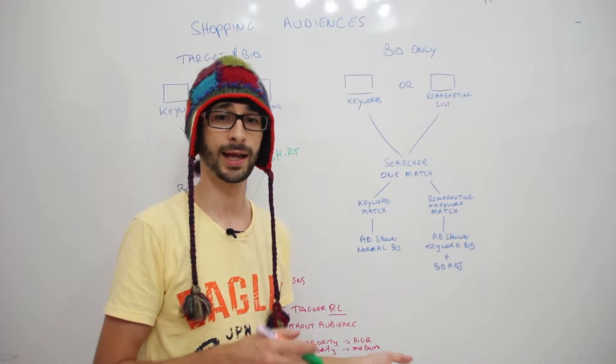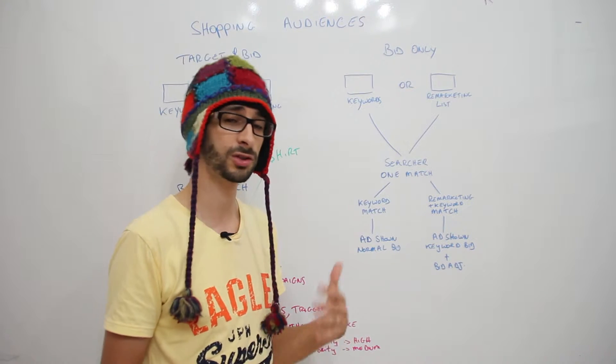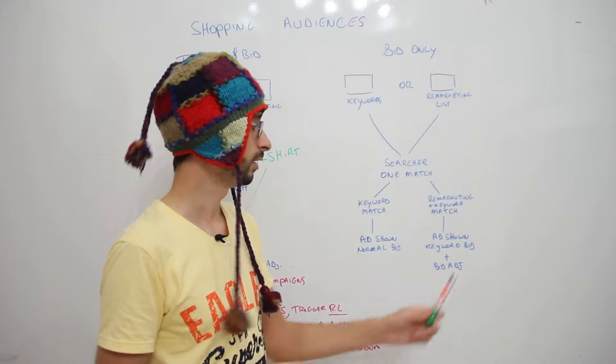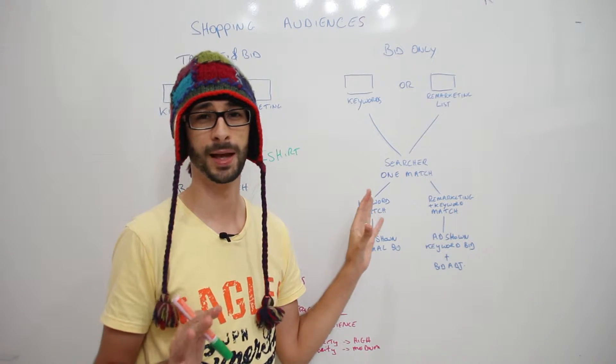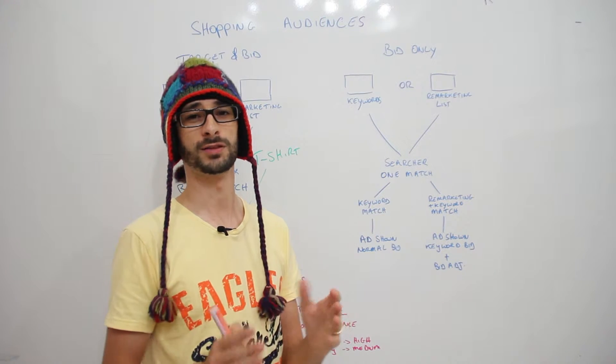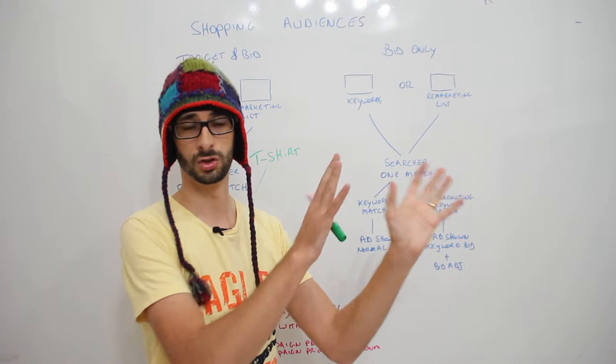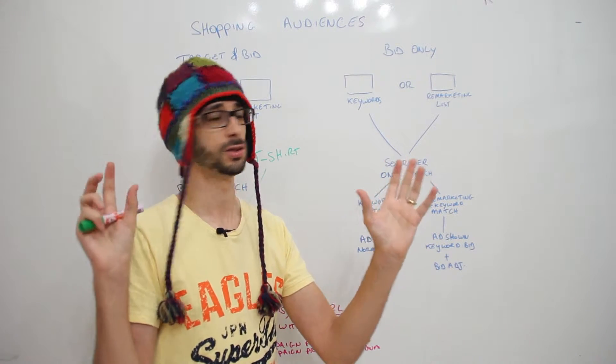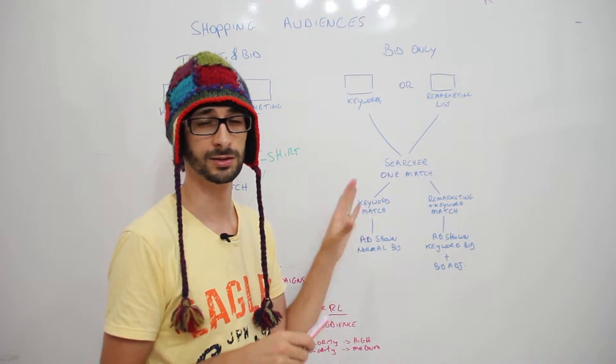Of course you can have a negative adjustment, but you can also have a positive adjustment, so for example plus 20%, plus 40%, or minus 20% and minus 40% for when it matches the remarketing. Now this is pretty good if you have a small campaign and you don't want to have a separate campaign for your normal search terms visitors and for your remarketing list. So it's good to have them combined if you have a small setup.